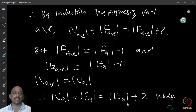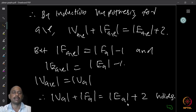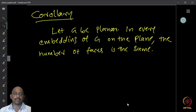So for any connected plane graph, the number of vertices plus number of faces equals number of edges plus two. As an exercise, figure out what happens when the graph has several components.